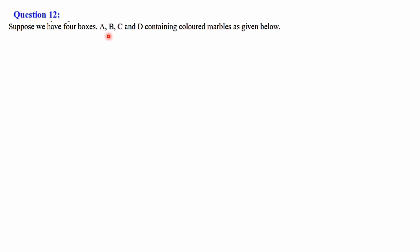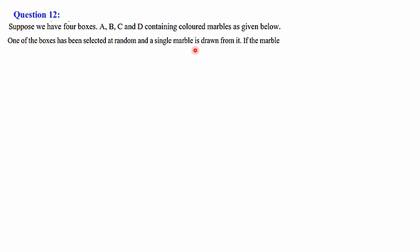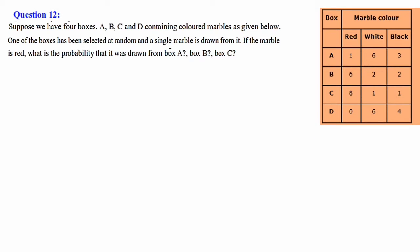Next we shall discuss question number 12. The question is: suppose we have four boxes A, B, C and D containing colored marbles as given below. One of the boxes has been selected at random and a single marble is drawn from it. If the marble is red, what is the probability that it was drawn from box A, box B, and box C? A table is given mentioning the box labels and the number of red, white and black balls. We are selecting a marble from the box — if the marble is red, what is the probability it was drawn from box A (first question), box B (second question), and box C (third question)?